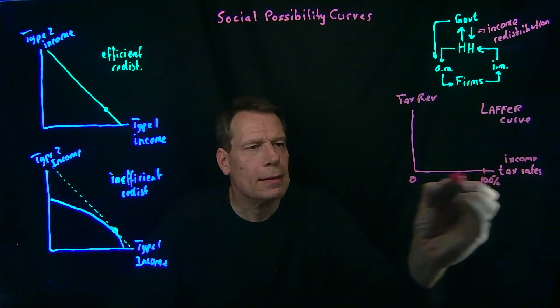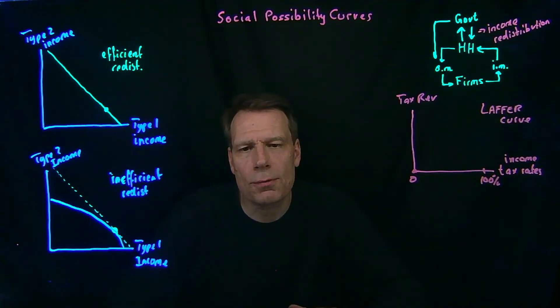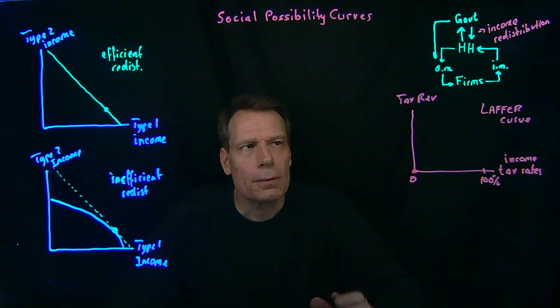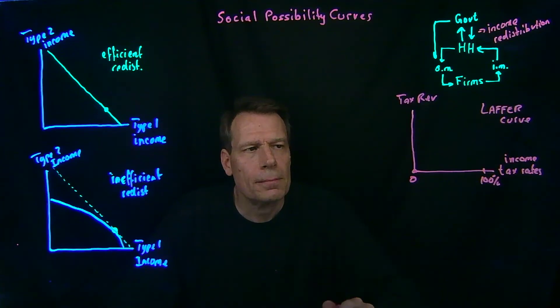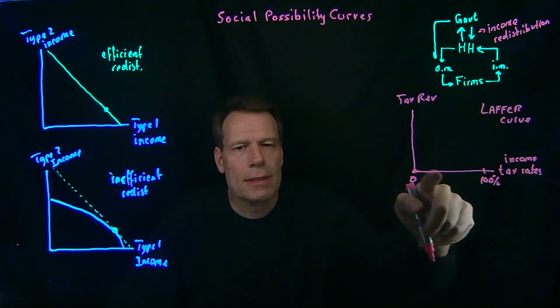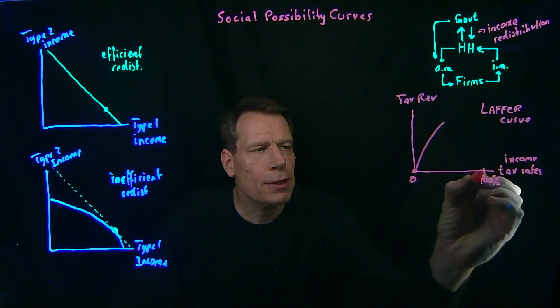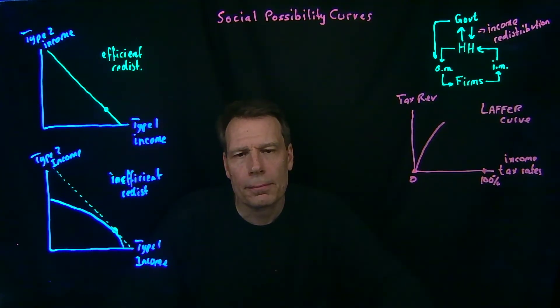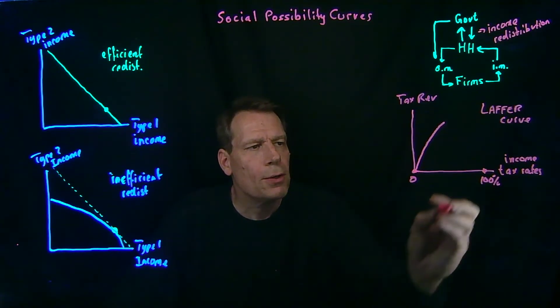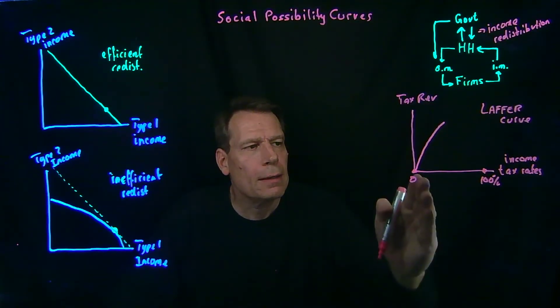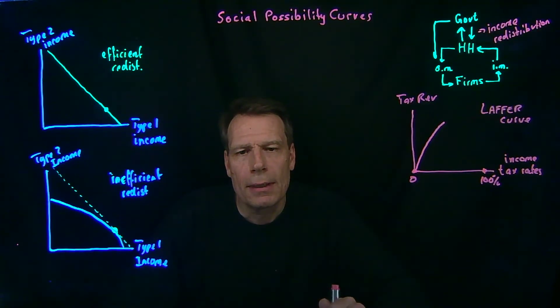Now, if we don't have any income taxes, and those are the only taxes we use for redistributing, we could not redistribute at all, and we get tax revenue of 0. As we increase the tax rate, tax revenue is going to rise. But we know eventually it's going to fall back to 0. Because if we employ 100% tax rates, then there's no point to generating any income. You would still be handing it over to the government. So we know we're going to end up back here if we impose 100% income taxation.